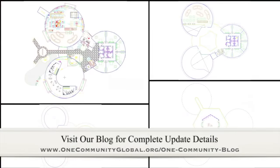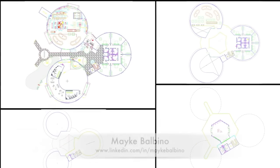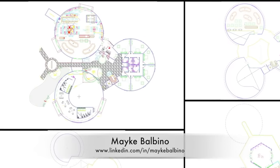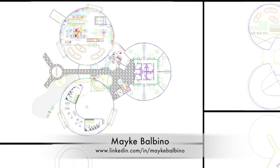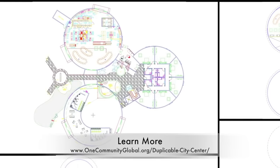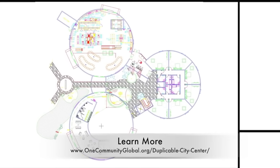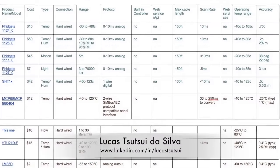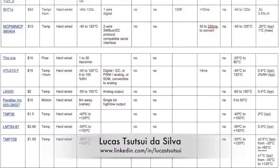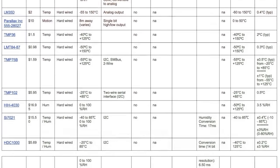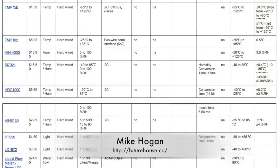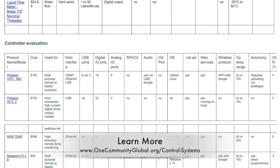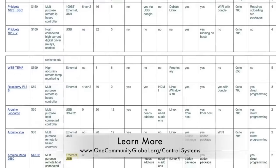This week Mike Balbino, architecture and urban design student, completed revision four of the duplicable city center designs in AutoCAD. This included new bathroom designs that eliminated the need for an entry door, new locations for water fountains, new second floor table layouts and dining dome, some slope additions to the third floor, and more cupola edits to the fourth floor. Behind the scenes, Lucas Silva, fourth year computer engineering student, completed extensive research into different control system sensors and controllers, and Mike Hogan, automation systems developer and business systems consultant, helped organize the necessary control systems design criteria — approximately 20 percent complete.